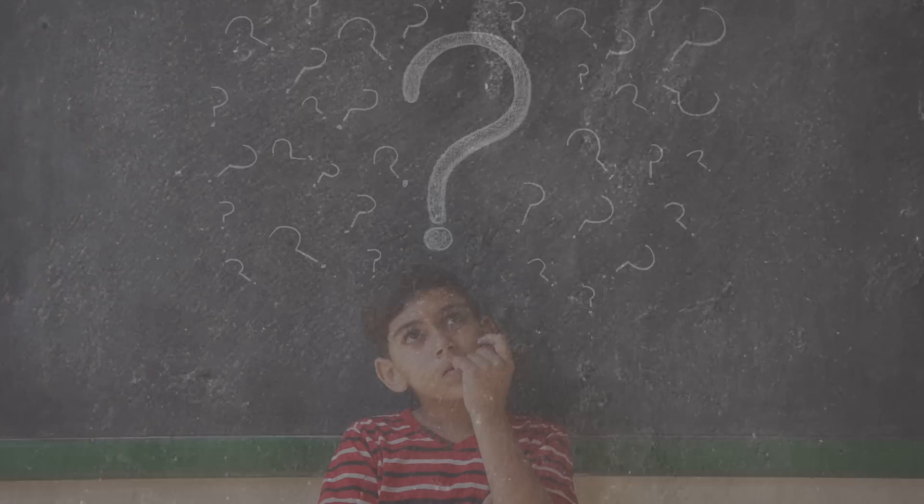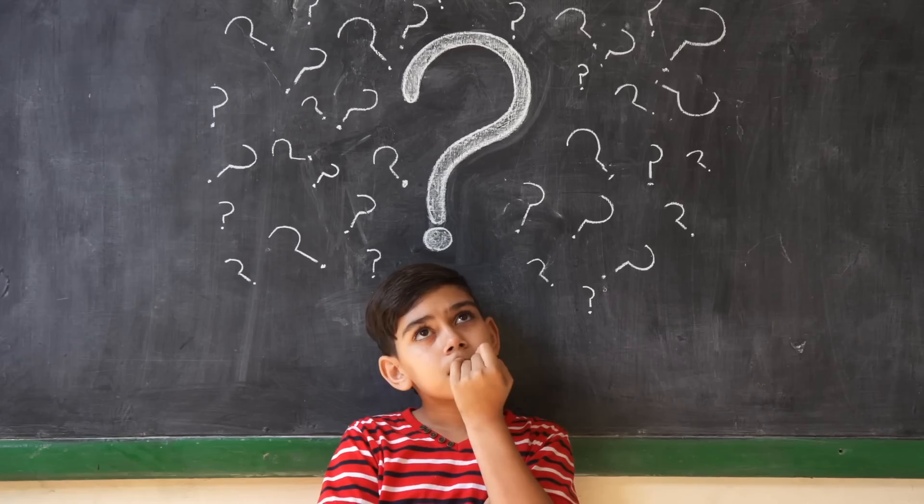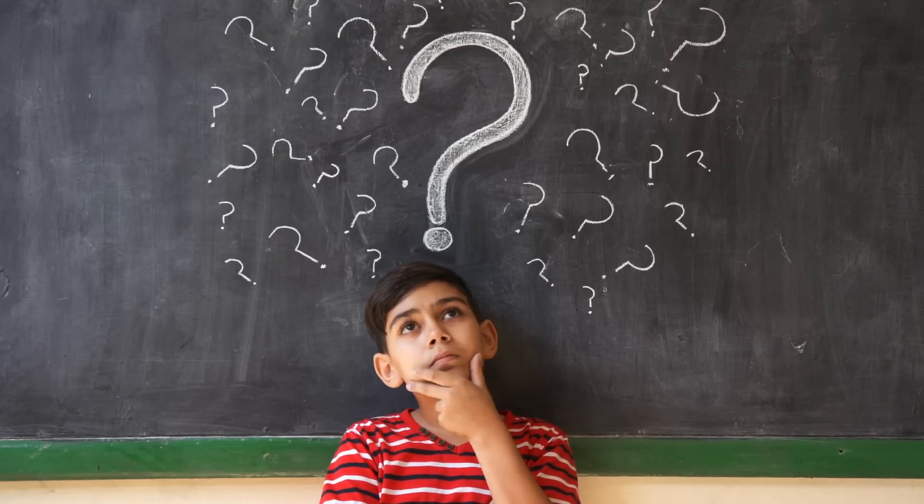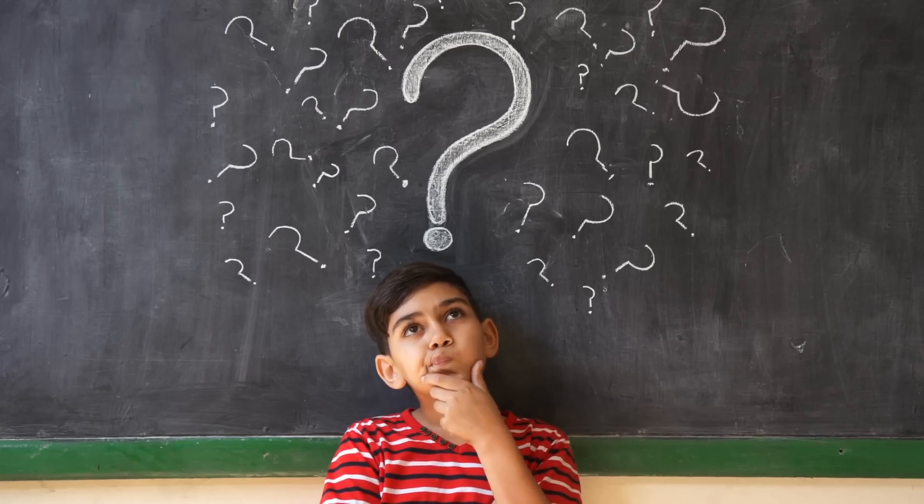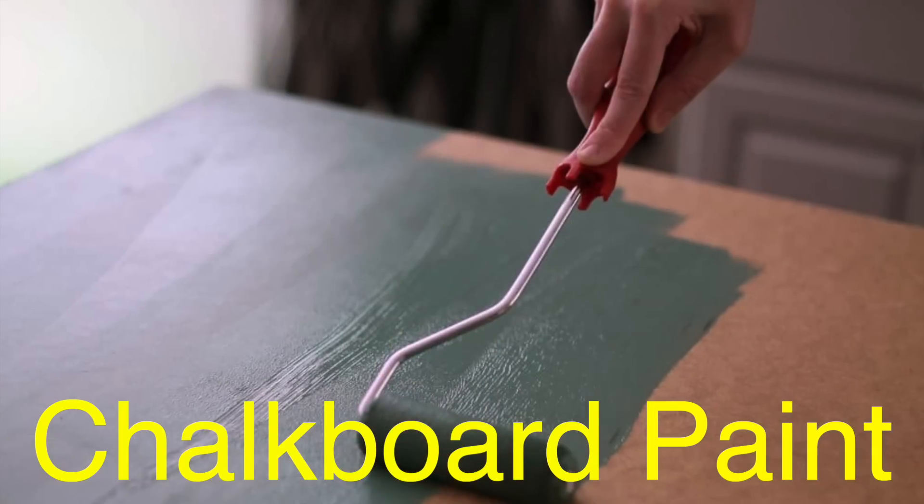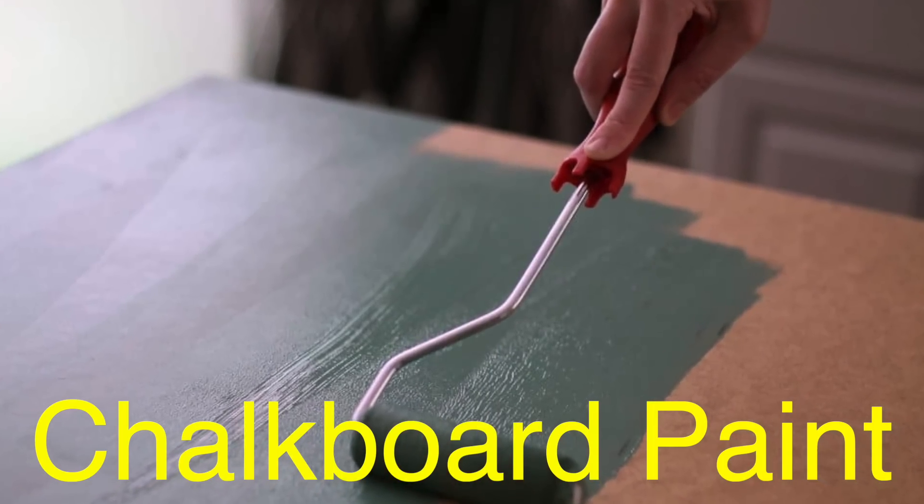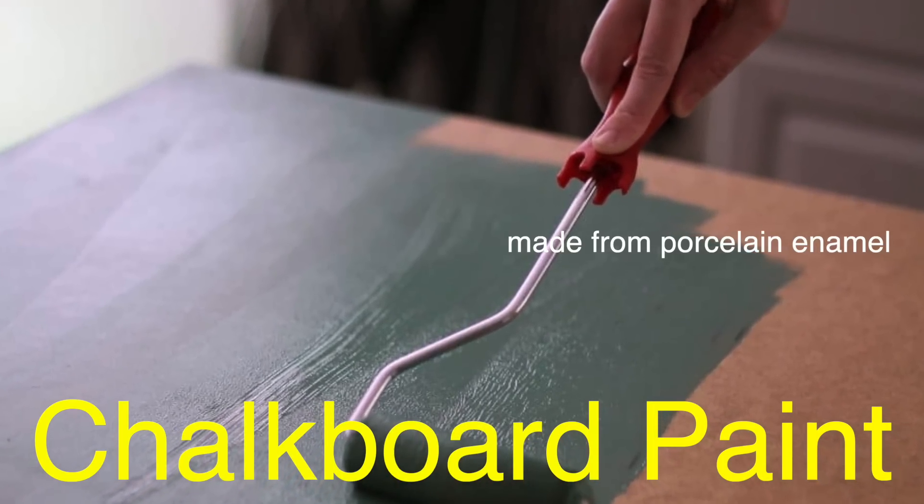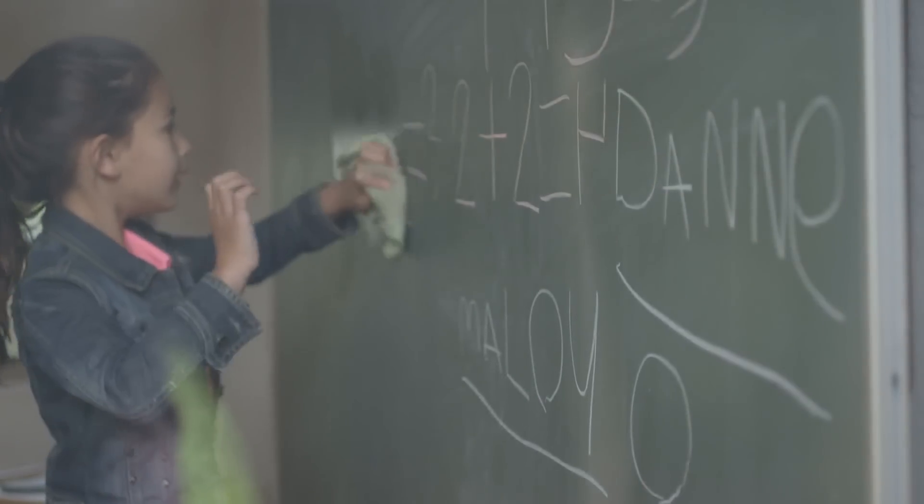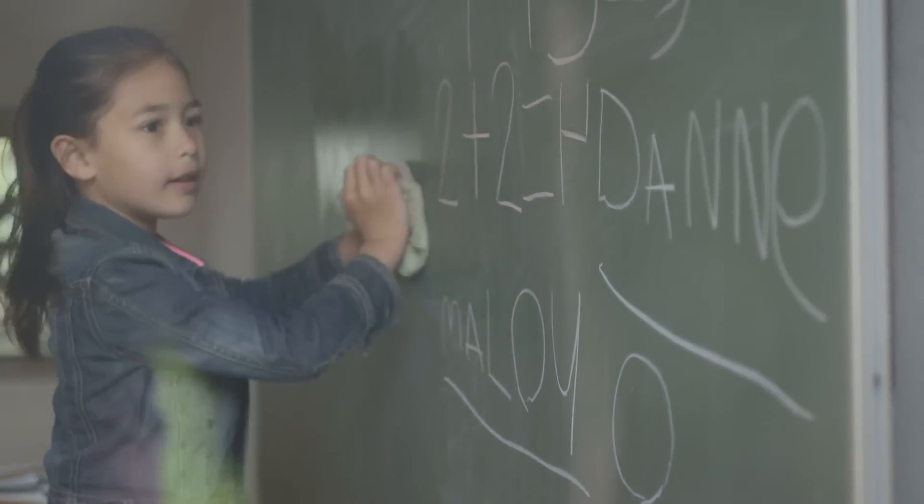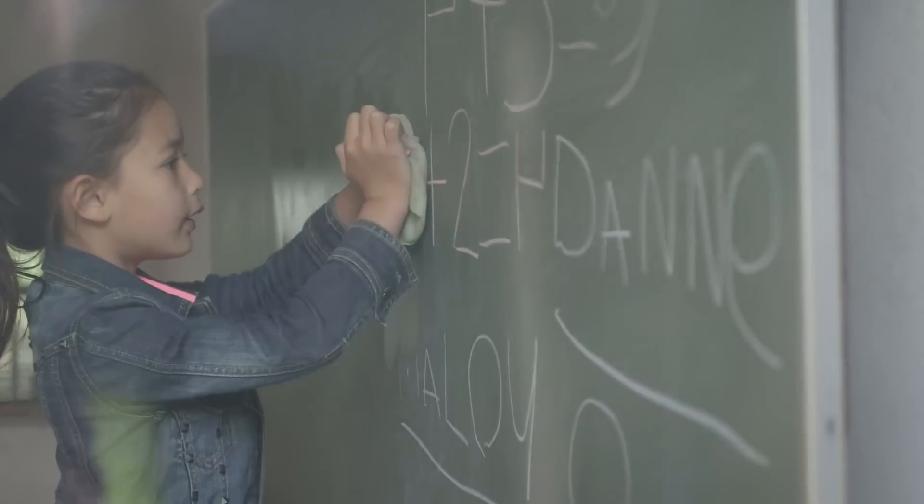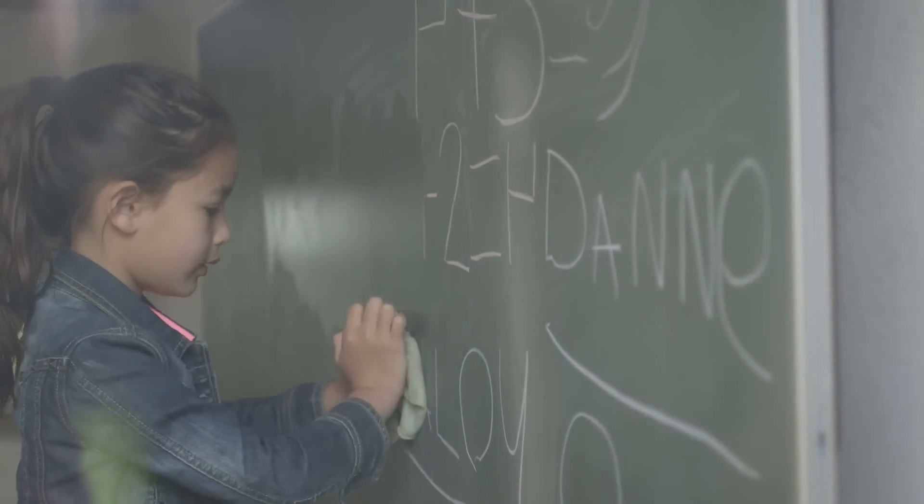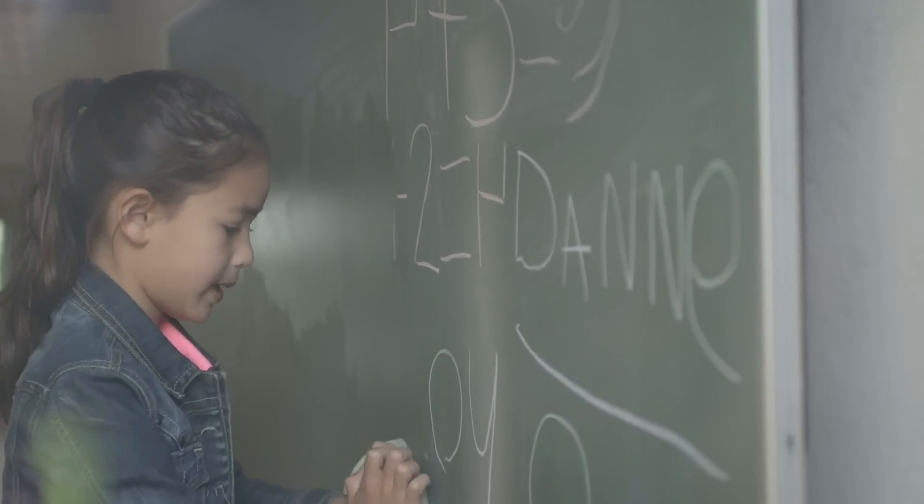For one, traditional blackboards made of slate were heavy and expensive to produce. As classrooms expanded and education became more standardized, the need for something lighter, cheaper, and easier to mass-produce became clear. Enter chalkboard paint, a smoother, cheaper material made from porcelain enamel over steel. This new material was durable and made it easier to clean off chalk residue compared to old slate boards. It was during this time that the color switch from black to green happened.